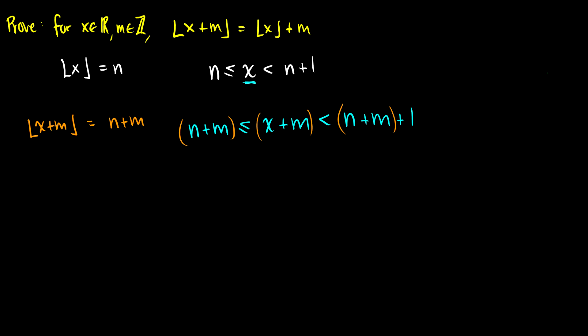So again, we just added m to each of these statements here. And of course, it preserves the inequality since all m's are equal. So now we have this statement, the floor of x plus m is equal to n plus m. But what is n? Well, n we defined as the floor of x. So there we have a proof that the floor of x plus m is equal to the floor of x plus m.